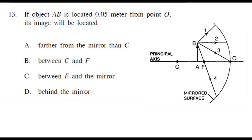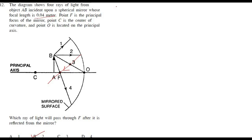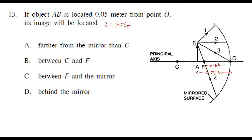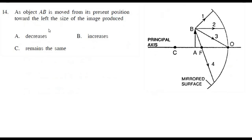Object AB is located at 0.05 meters from pole O. All distances are measured from the pole. The focal length given is 0.04 meters. So the object is between F and C. We know the image would be beyond C and larger. As the object AB is moved towards the left — further from the mirror — the image goes towards the mirror and becomes smaller and smaller, so the size decreases.